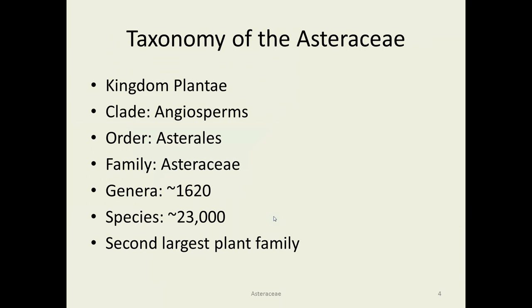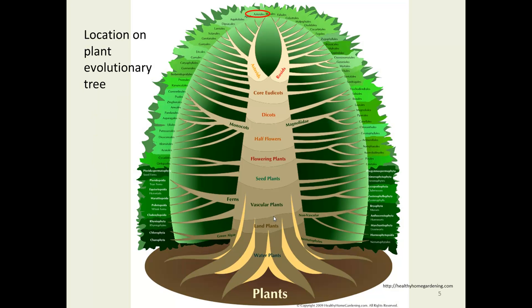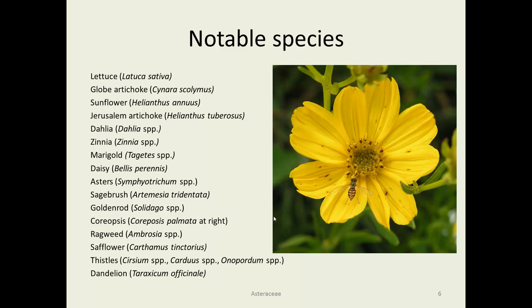It's the second largest plant family, competing with orchids to see who has the most species. Plant taxonomists are neck and neck deciding how many species there really are. These things hybridize a lot, which complicates things. They are in the order Asterales, way up at the top in the asterid group on the evolutionary tree.